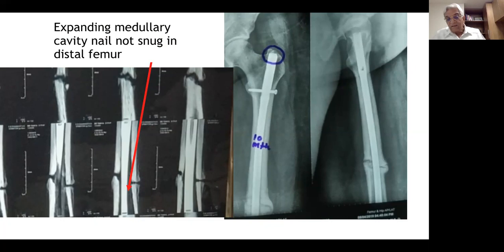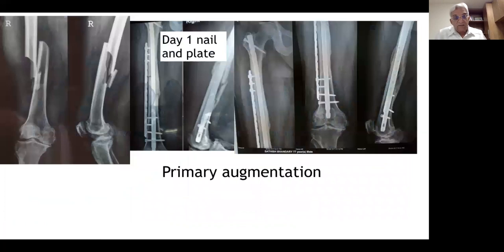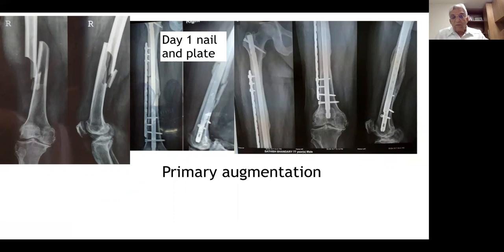For a fracture at the junction with a gap, I recommend primary plating and grafting if needed — and it heals up completely well. In one such case, I performed nailing and plating on day one with no grafting since there was no comminution, and the fracture healed extremely well. The patient could walk with partial weight bearing on day one. My suggestion: for junctional femur fractures at the upper two-thirds and lower one-third with expanding medullary cavity, use three distal screws, and if in doubt go ahead with primary subcutaneous plating.